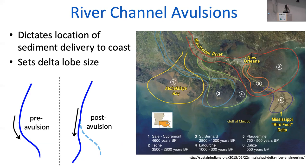An interesting thing to note is that the modern delta — the modern bird's foot lobe — actually sticks out quite a bit farther than the rest of the lobes, in part due to the fact that we're regulating where the channel is going. These are really natural processes that happen on deltas, but we don't fully understand all the drivers of when, where, and why these channel avulsions are going to occur, even though they've been the focus of a lot of recent research.